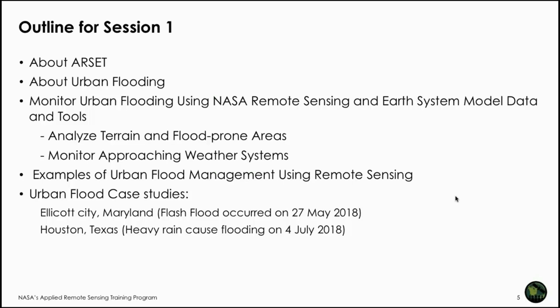We'll then move to examples of urban flood management using remote sensing, followed by demonstrations of two flood cases. The first is Ellicott City, Maryland, a flash flood that occurred in May of this year. The second is Houston, Texas, where heavy rain caused flooding on July 4th. We'll demonstrate how to look at terrain data, identify flood-prone areas, monitor precipitation before a flash flood occurs, and identify where water logging may be occurring.